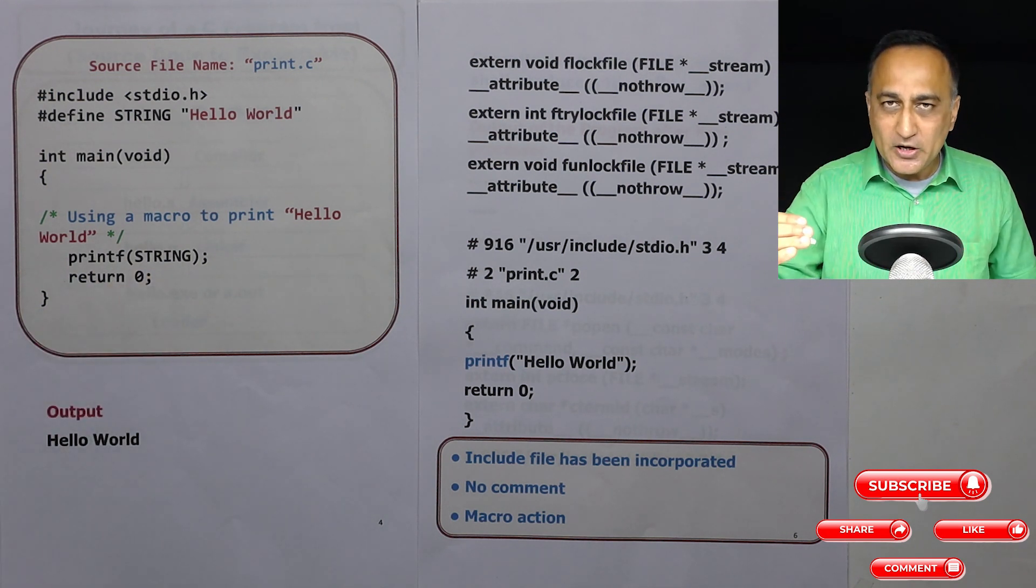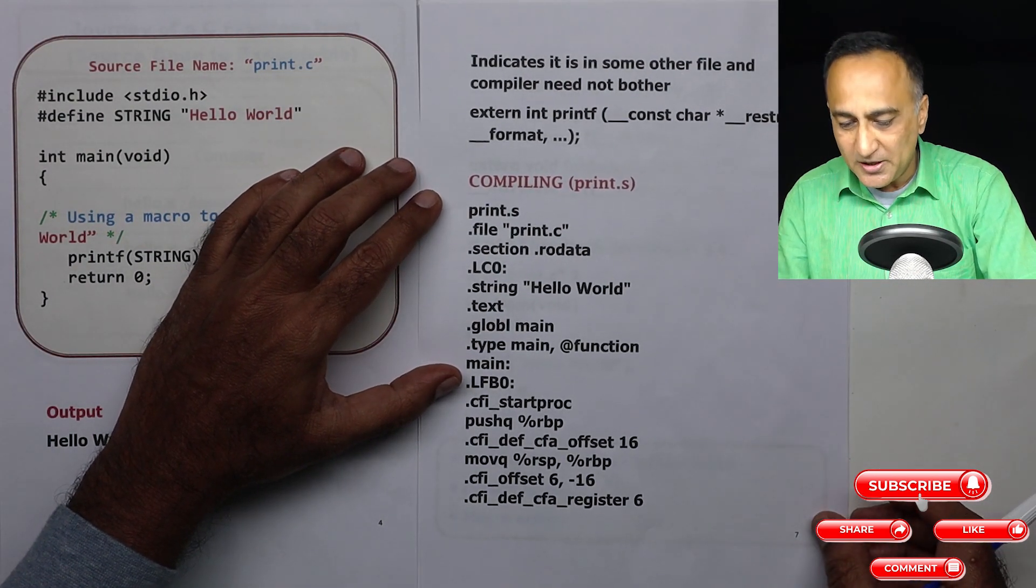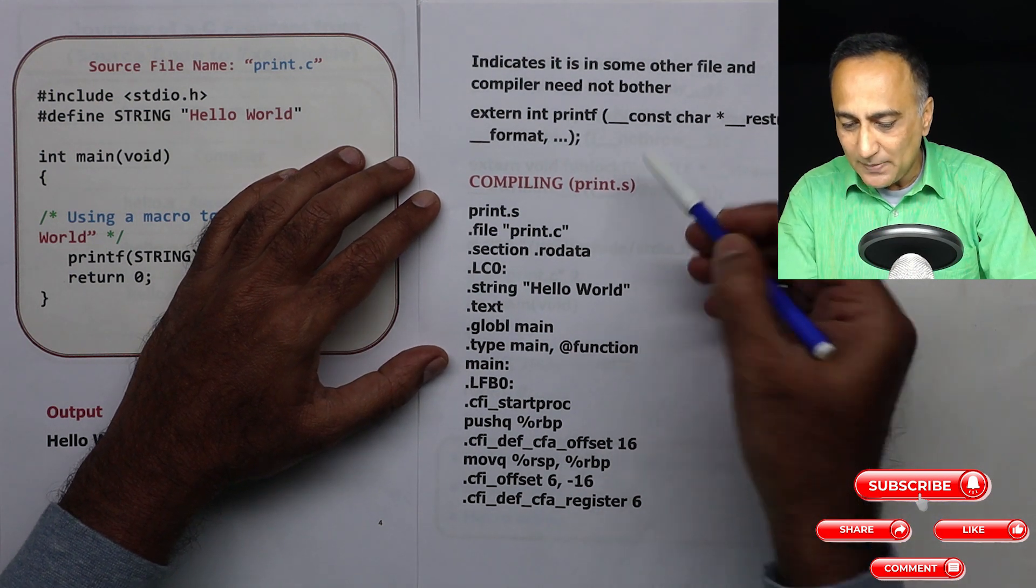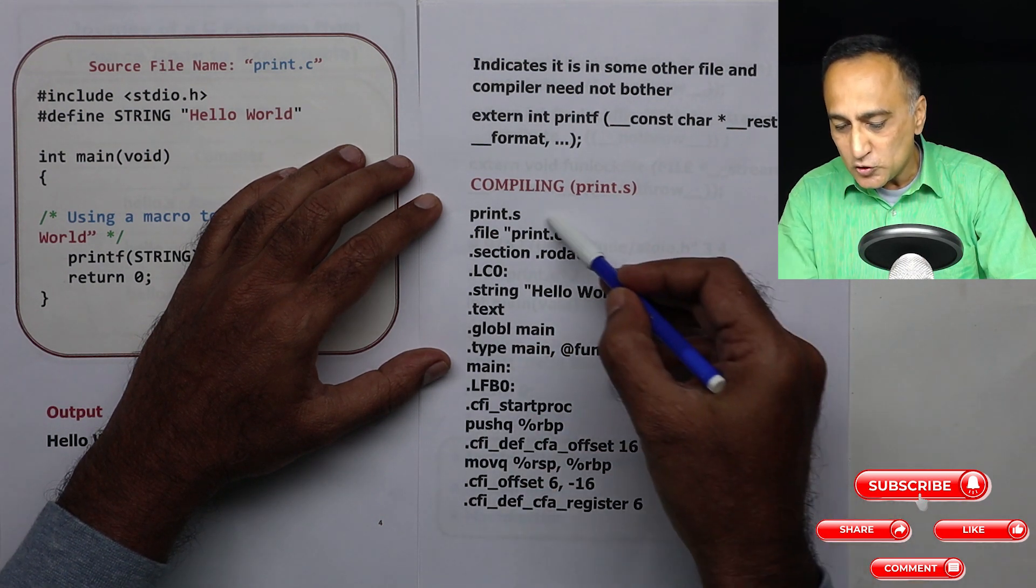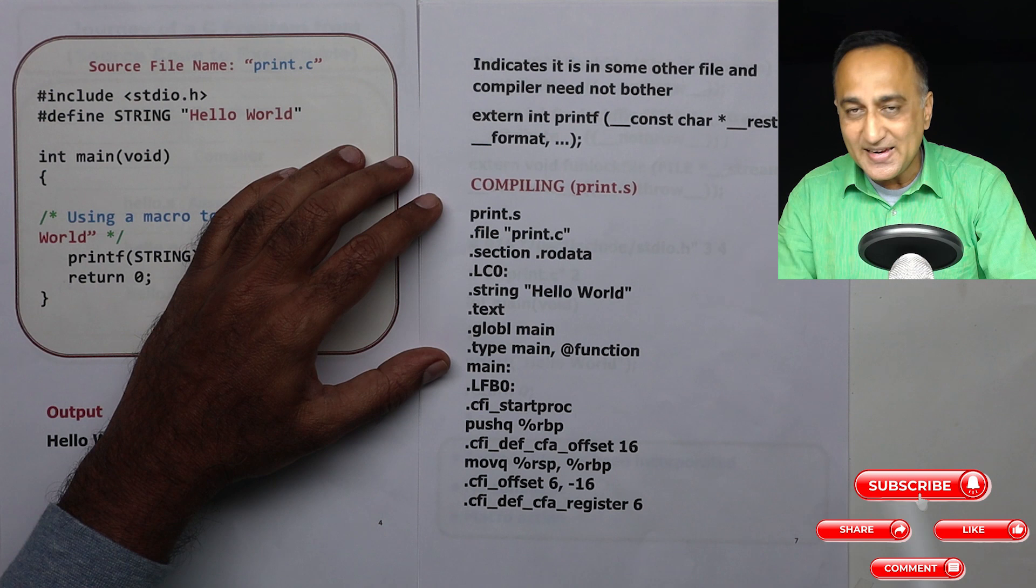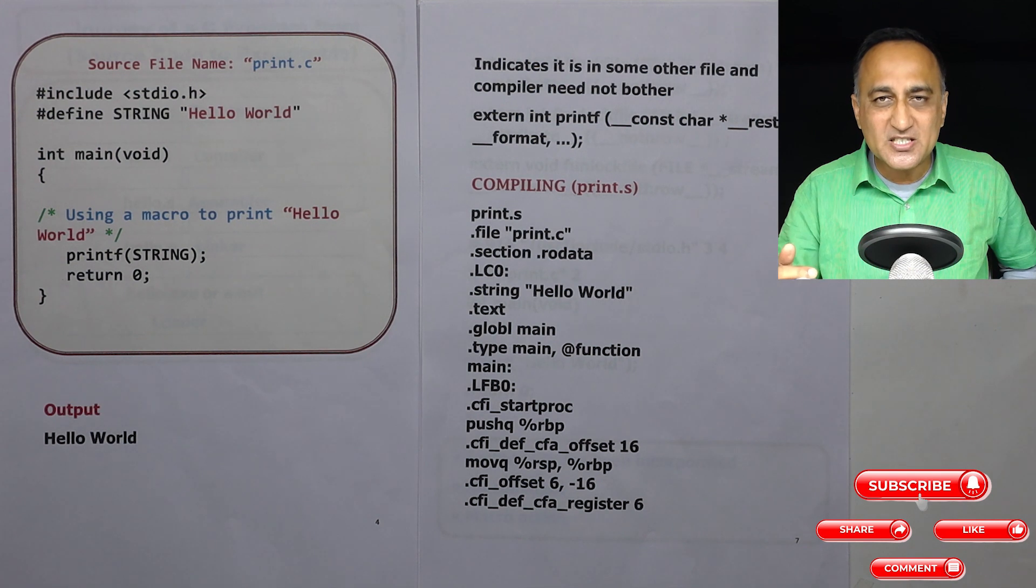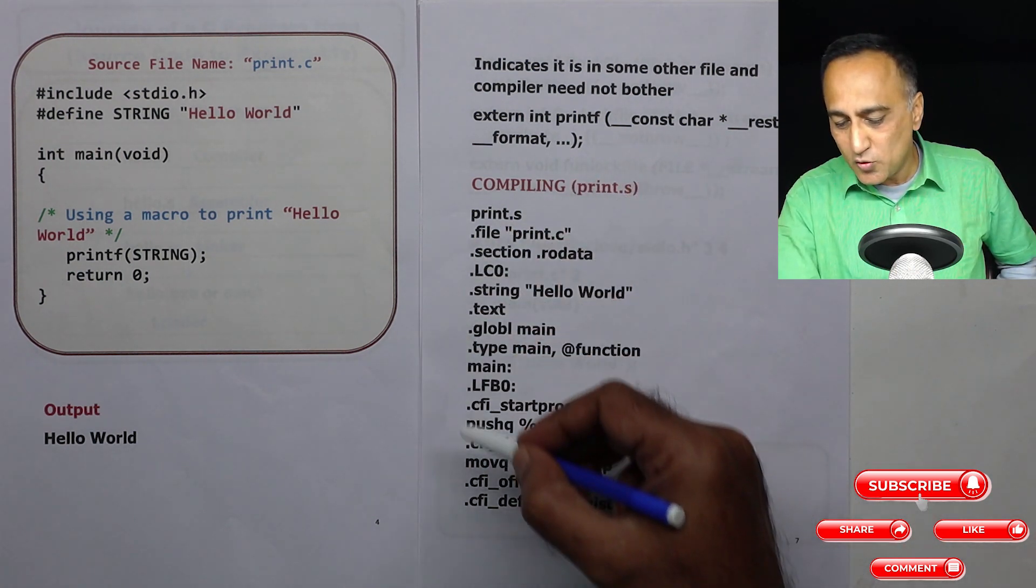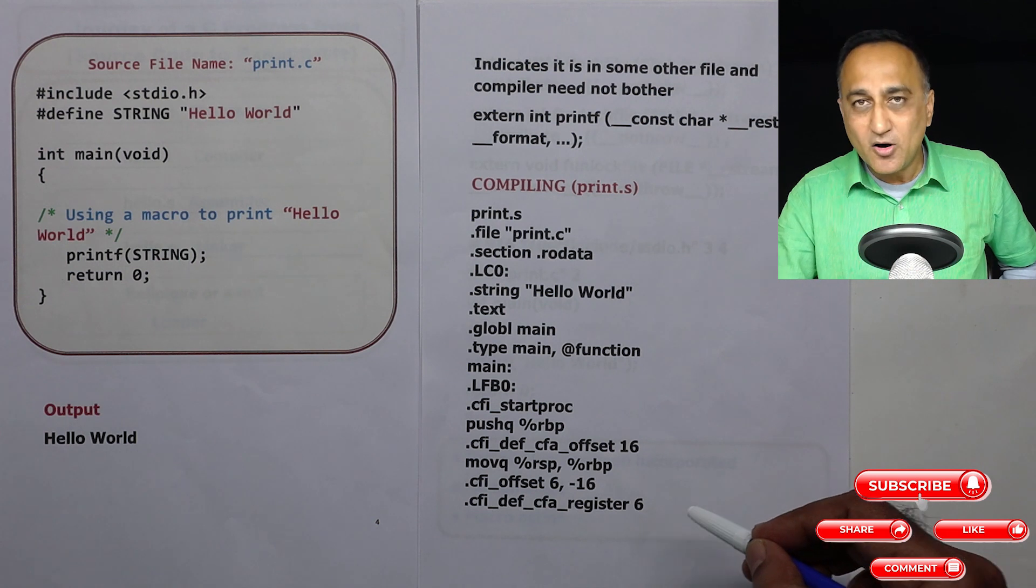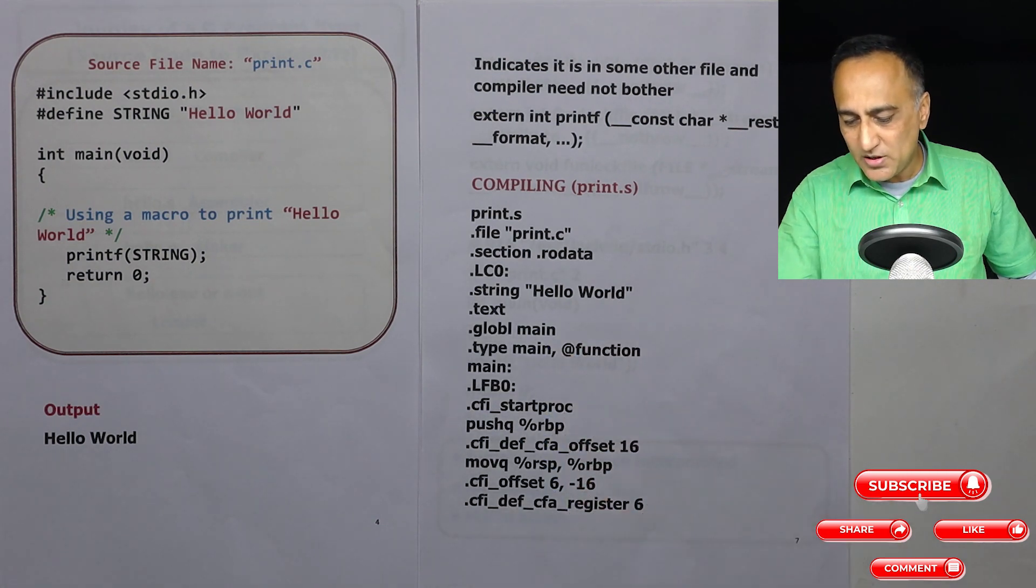Now this print.i when I then send it to the compiler, the compiler will produce a file called print.s. In print.s what happens is the file print.i is converted into assembly language code. So all of this code is basically the assembly language code which is created taking into consideration the hardware available on that particular machine or that particular platform. So assuming this is an Intel machine, this is a code representing the code which is going to run on the Intel machine.